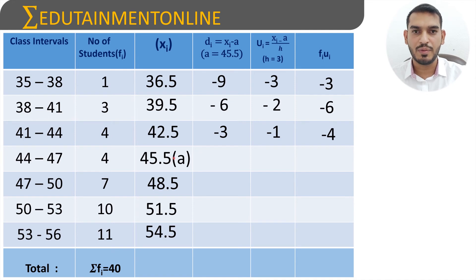Now 45.5 minus 45.5 is 0. 0 divided by 3 is 0, and 0 times of 4 is 0. Now 48.5 minus 45.5 is 3. 3 divided by 3 is 1. 1 times of 7 is 7.